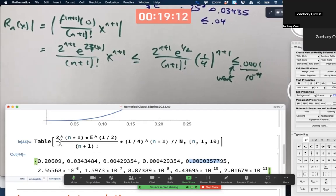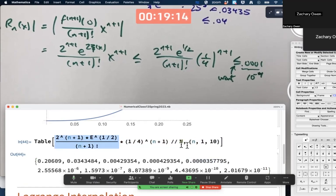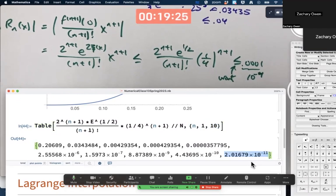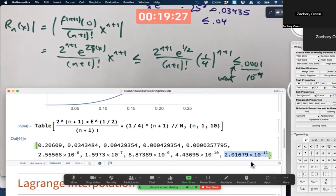Table just gives you values of whatever this is over a range of values of n. And you can see I went up to n equals 10. n equals 10 would be good enough to guarantee we're within 10 to the negative 10. Good enough for calculator approximation.